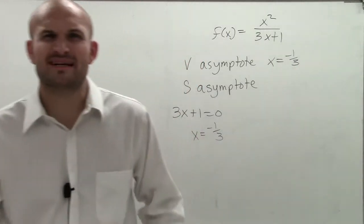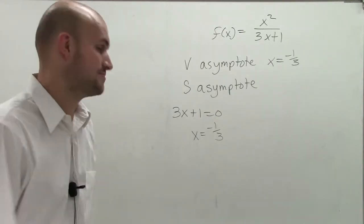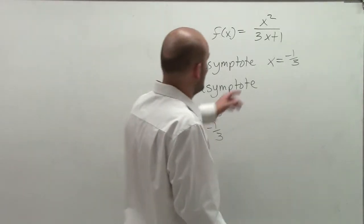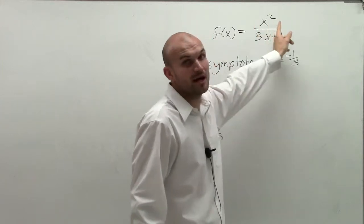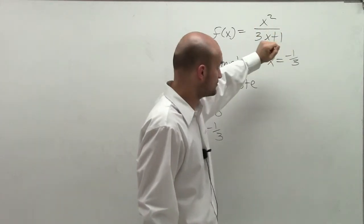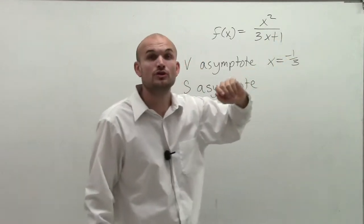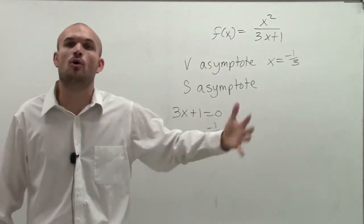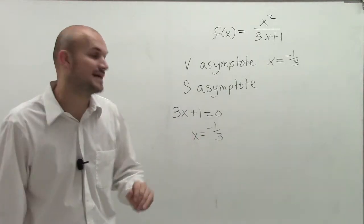Now, to find the slant asymptote, some of you might say, what happened to the horizontal asymptote? Well, remember the horizontal asymptote test told us that whenever the degree of the polynomial in the denominator is less than the degree of the polynomial in the numerator, we have no horizontal asymptote. We're now going to have a slant or oblique asymptote.